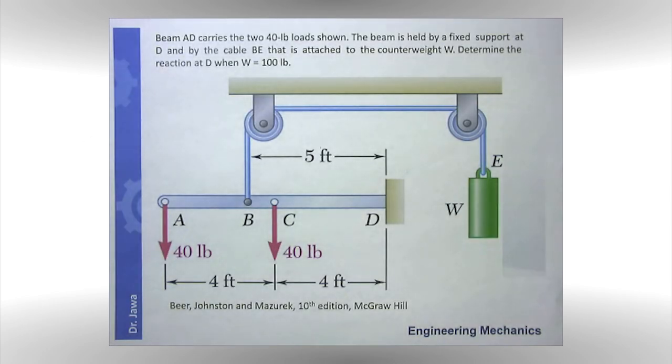Alright, everybody. We have another example here, also from the popular textbook, Beer Johnston. This is a 2D rigid body equilibrium problem.